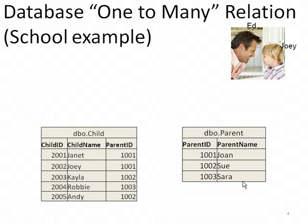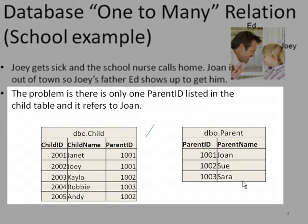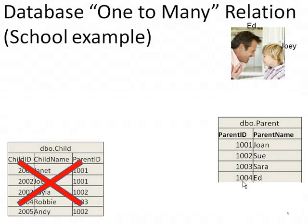That works great for a little while. But consider this example: Joey gets sick and the school nurse calls home. Joan is out of town, so Joey's father, Ed, shows up to get him. The problem is there's only one parent ID listed in the child table, and it refers to Joan, not Ed. So this doesn't quite scale enough to handle both parents.